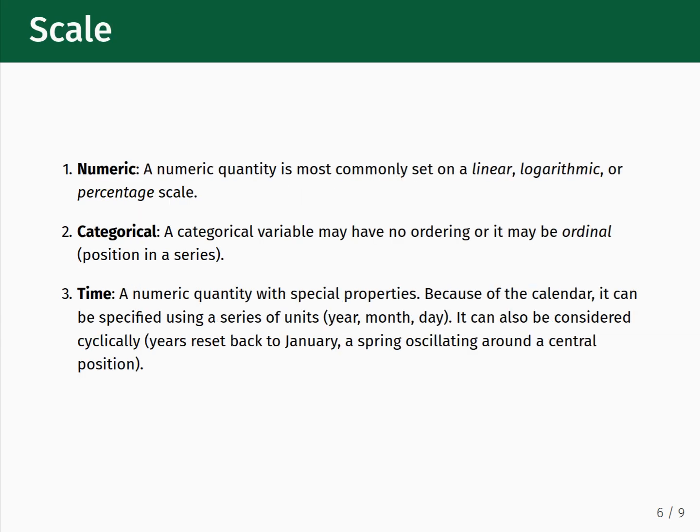The third basic element of a data visualization is scale, of which there are three types. The first is the numeric scale. The most common kinds are the linear scale, which is the default scale you will see most often; the logarithmic scale, which counts along an axis in powers of a base number such as 10; and the percentage scale, where you consider the relative fraction of observations instead of their absolute total. The second kind of scale is the categorical scale, where variables may have no particular ordering, or they may be ordinal, where position in a series has meaning.